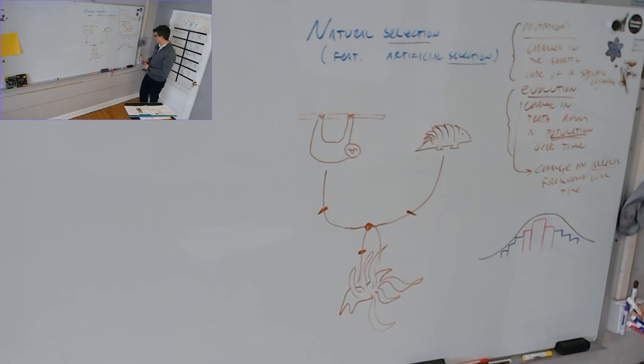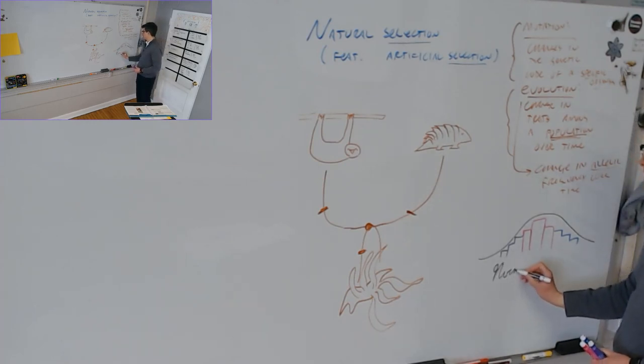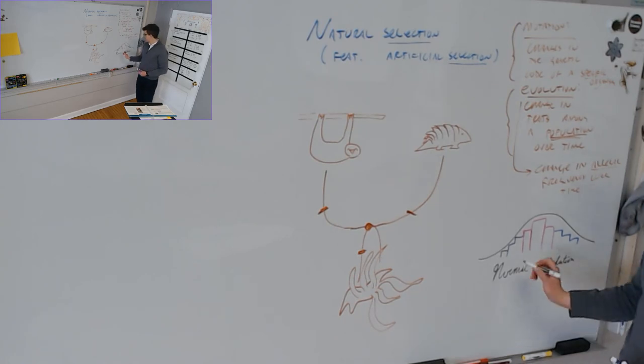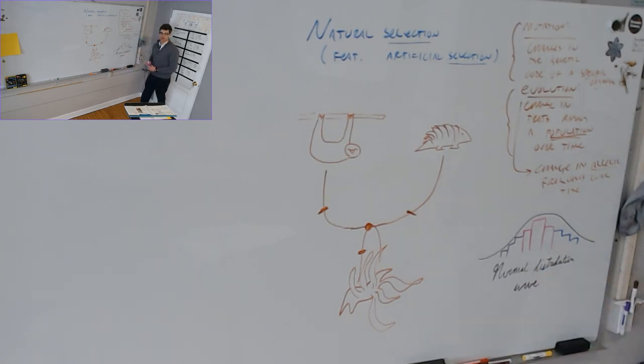This is called a normal distribution curve. A normal distribution curve is what we have here. And the change in this over time, the change in the frequency of alleles, frequency means how common, how often these traits show up, these genetic traits called alleles. A change in this over time is evolution. And that has to take place in a population. Evolution is over a population.